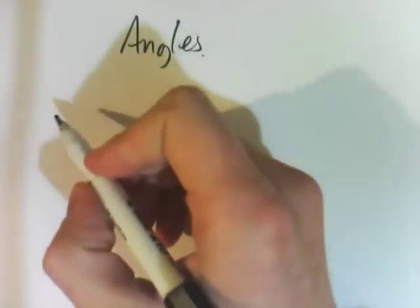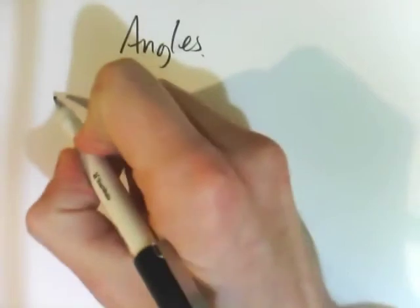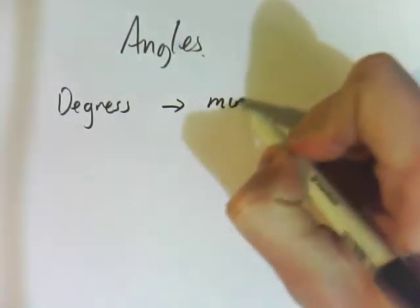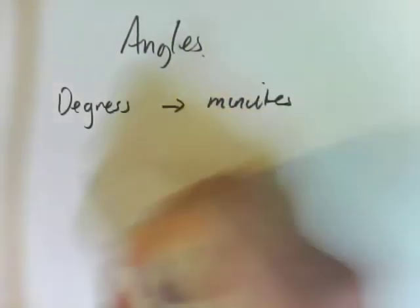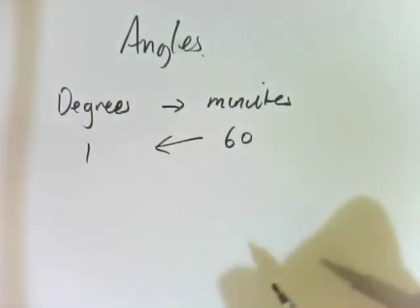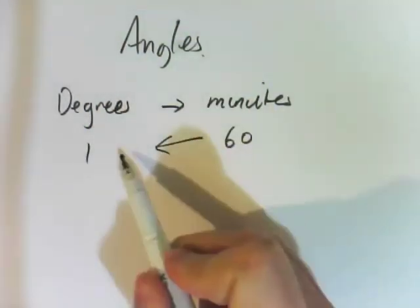Angles. Angles are easy. What we need to work with today is degrees and minutes. Okay, so there are 60 minutes in one degree. So 60 minutes in one degree.